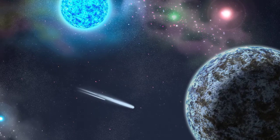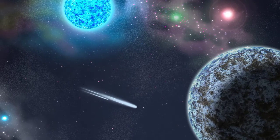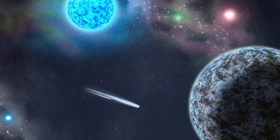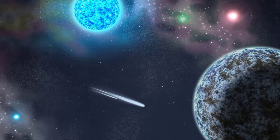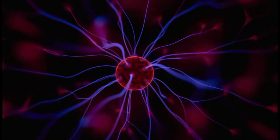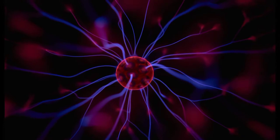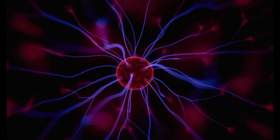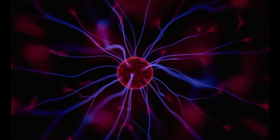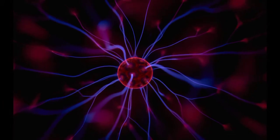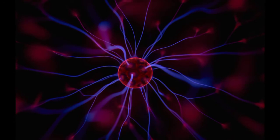Some neutron stars emit beams of electromagnetic radiation that make them detectable as pulsars. Indeed, the discovery of pulsars by Jocelyn Bell Burnell and Antony Hewish in 1967 was the first observational suggestion that neutron stars exist.